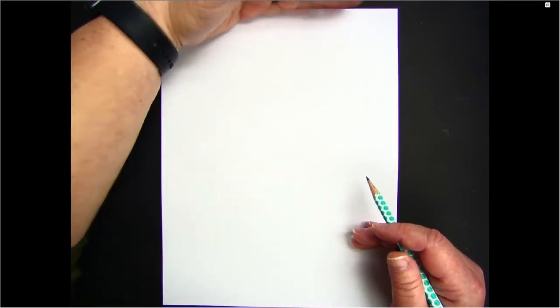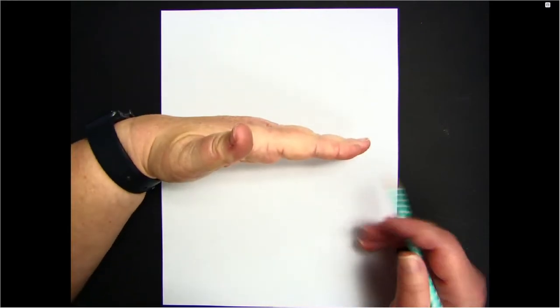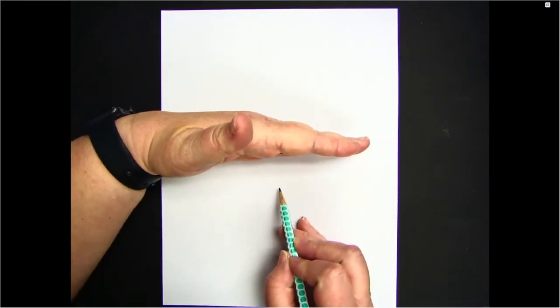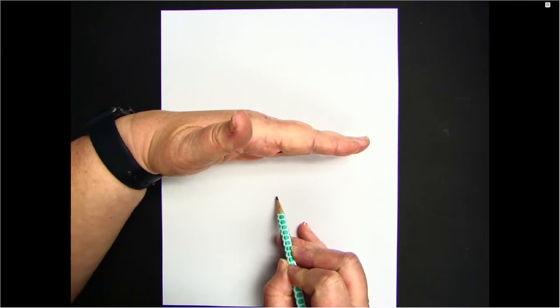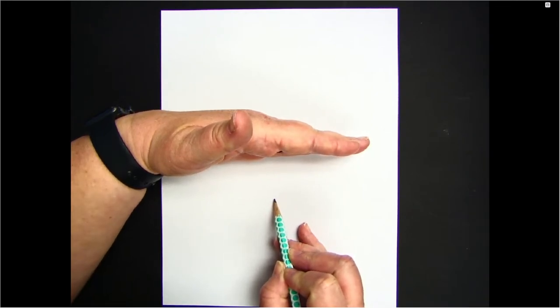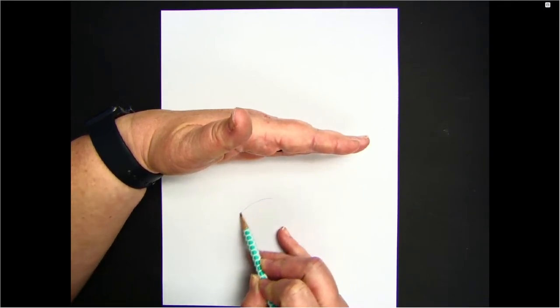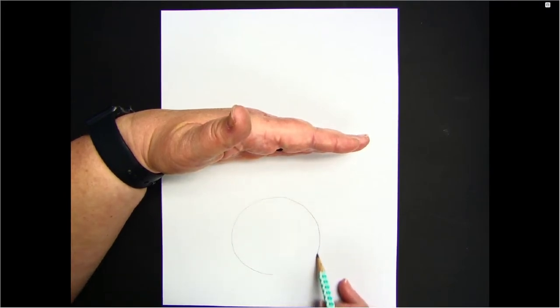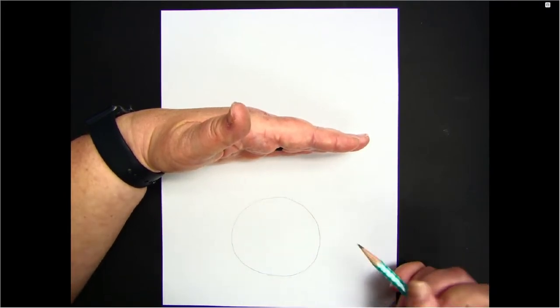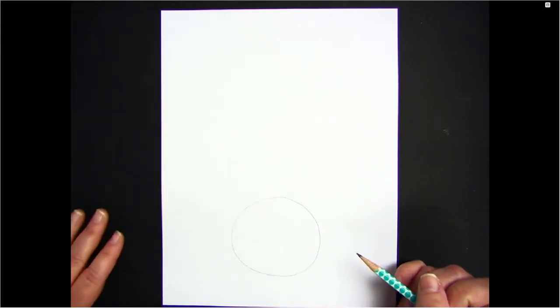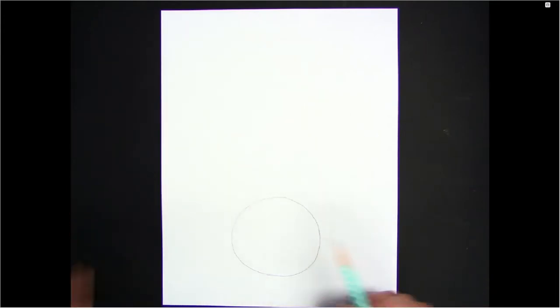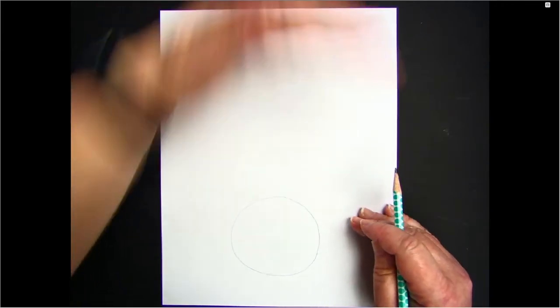We're going to start our drawing at the bottom half of our picture. We're going to break our page into halves, so from top to bottom find the middle. Below the middle we're going to draw a circle. Your circle does not have to be perfect, just get it as round as you can.